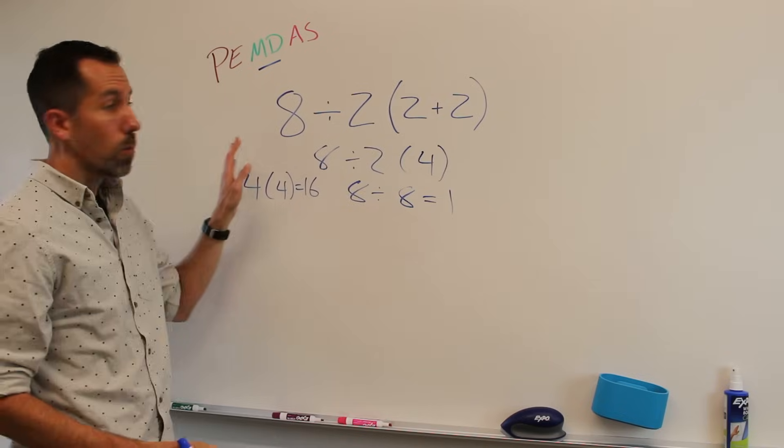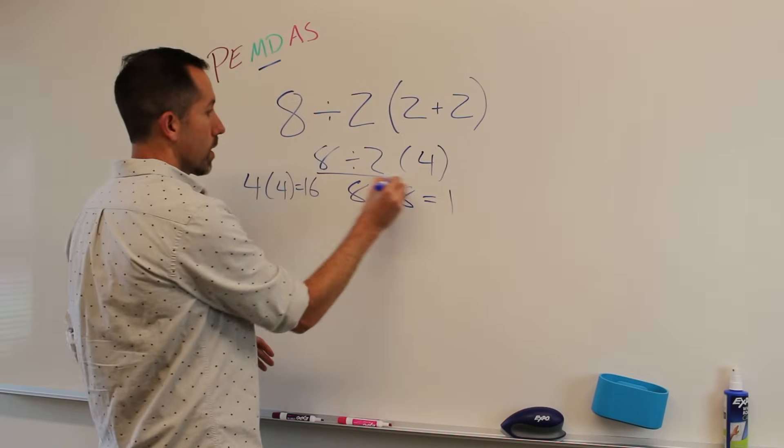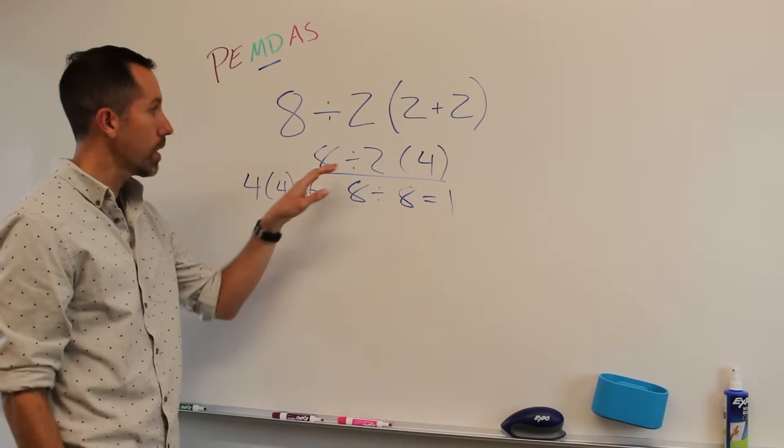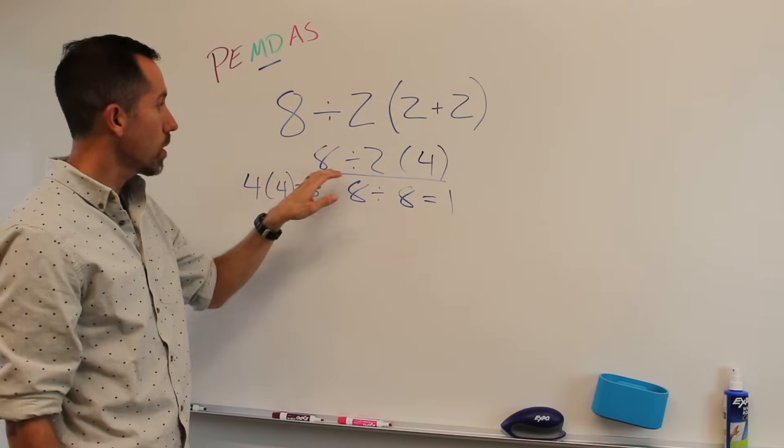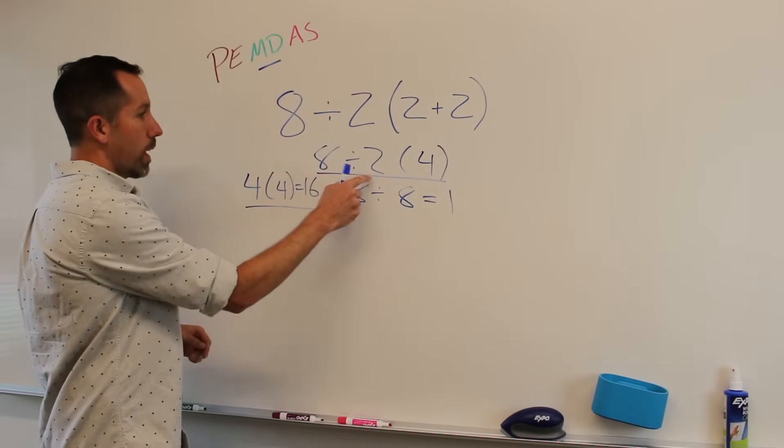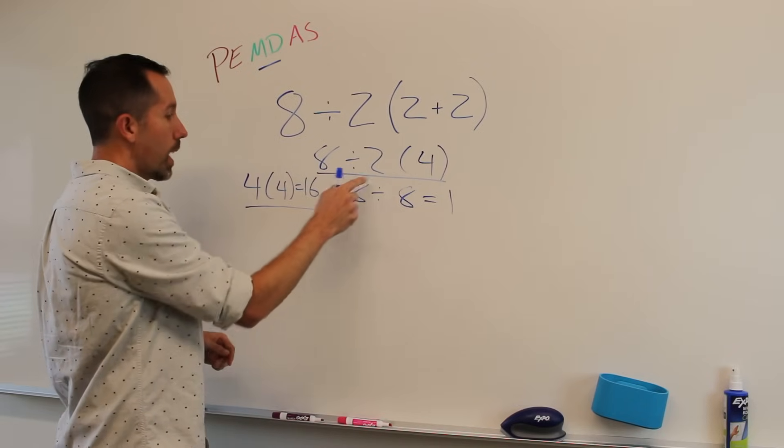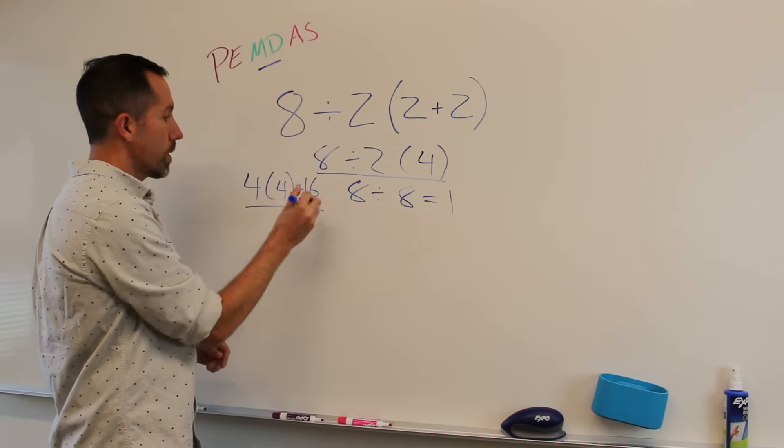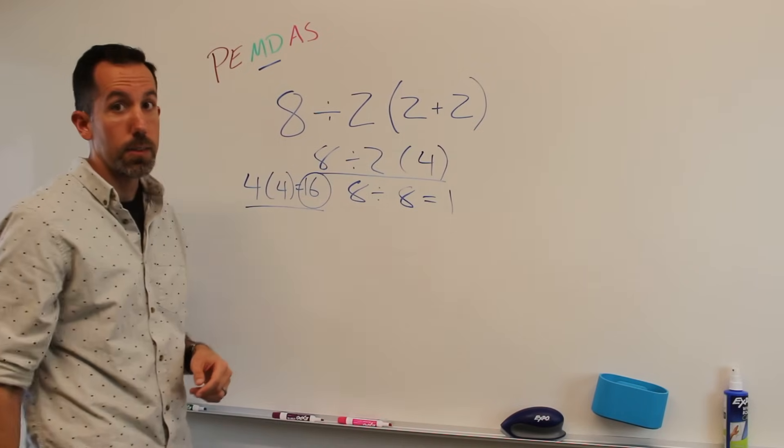The answer is when you've got this type of expression, where you've got the same operation to do, you start left to right, which is why you should always do 8 divided by 2 first, and then you'll get 4 times 4 and 16. So 16 is the right answer for this problem.